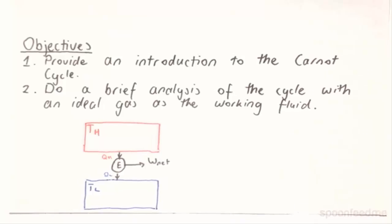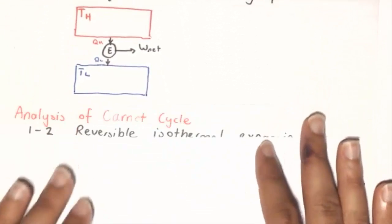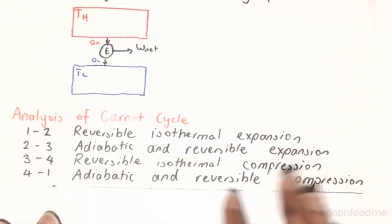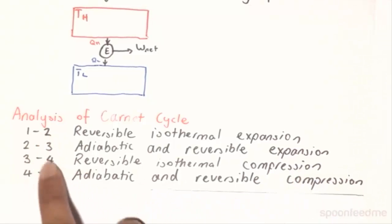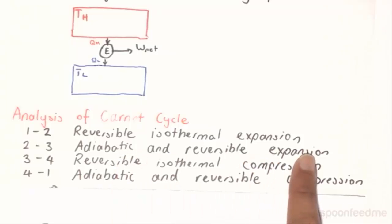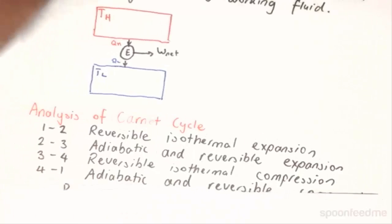The cycle that the Carnot engine undergoes is as follows. We have a reversible and isothermal expansion for process 1-2. Process 2-3 is an adiabatic and reversible expansion, which is an isentropic expansion. Process 3-4 is a reversible and isothermal compression. And finally, process 4-1 is an adiabatic and reversible compression.